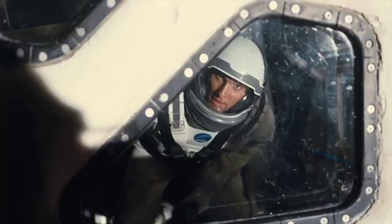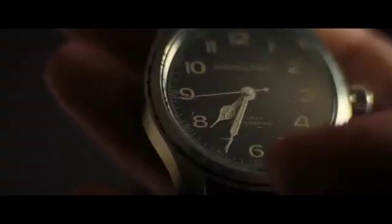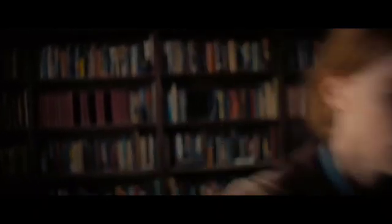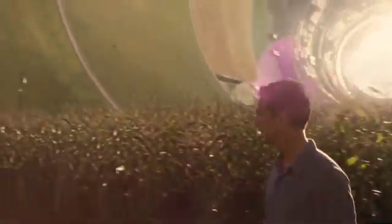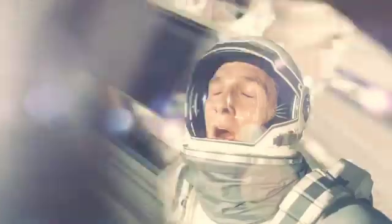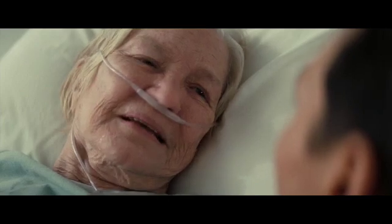One by one the crew is killed off as planet after planet proves uninhabitable, until only Cooper and scientist Dr. Amelia Brand remain. Cooper sacrifices himself so Brand can travel to the last candidate planet, and ends up falling into the black hole. But rather than dying, he finds himself in a tesseract — a three-dimensional depiction of space-time constructed by humans in the distant future. Realizing that he is part of a closed time loop, Cooper uses the tesseract to create the gravitational anomaly at his house and communicate with his past self. He also transmits physics data from inside the black hole to his daughter so she can solve the grand unified theory of physics and construct giant anti-gravity arcs to transport humanity to their new home planet. Cooper is then ejected from the tesseract and reunites with his now elderly daughter just before she passes away.